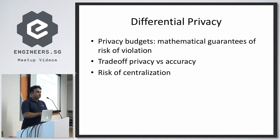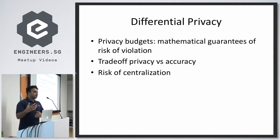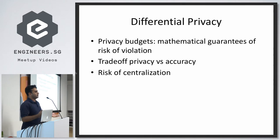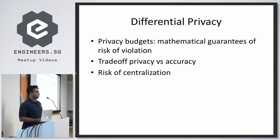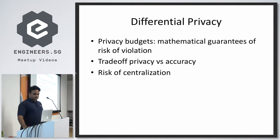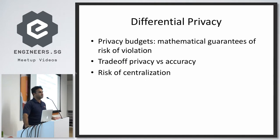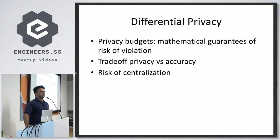Differential privacy is about how many queries you can run, how much noise you want to add, and you can trade off between them. Based on that, you can compute a probability of violation of privacy. Based on this description it sounds fairly promising, but it's the solution to some problems, not all problems.